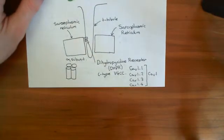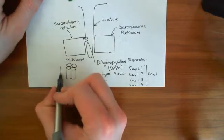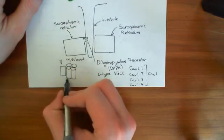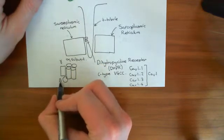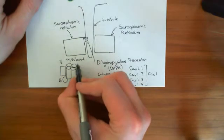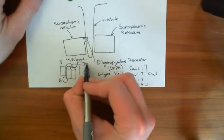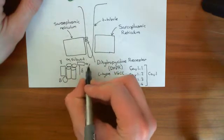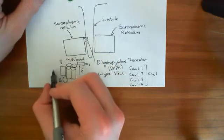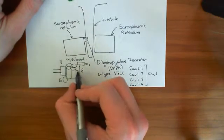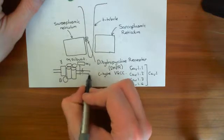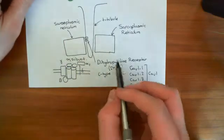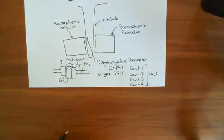Voltage-gated calcium channels also have a bunch of auxiliary subunits. Alongside the alpha-1 subunit, you will also have a gamma subunit, a beta subunit on the cytosolic side, and an alpha-2 delta subunit. The alpha-2 and delta portions are linked together, forming the alpha-2 delta subunit. The phospholipid bilayer separates the extracellular aspect from the cytosolic aspect. That's what is meant by the dihydropyridine receptor overall.